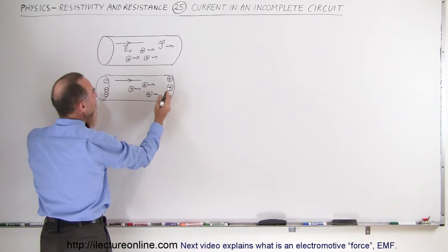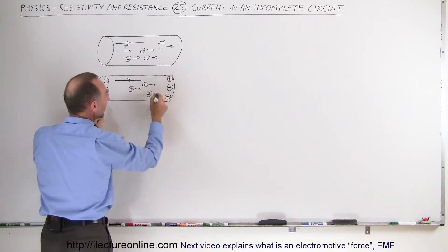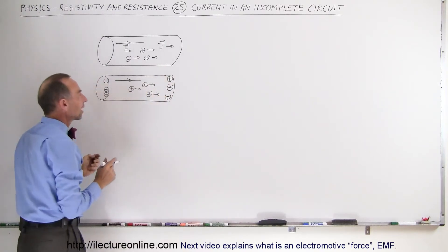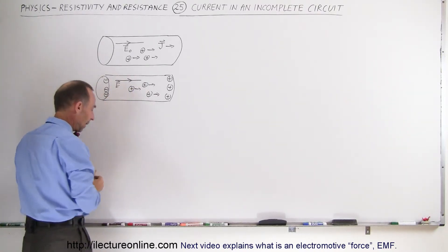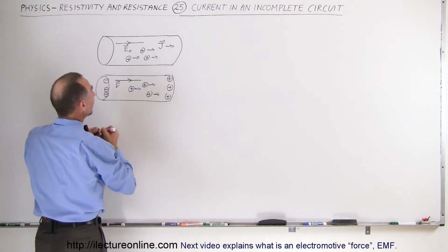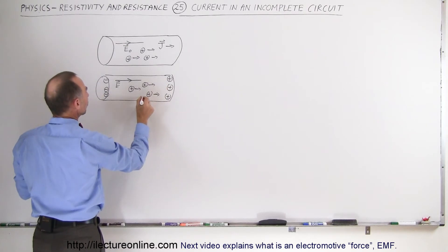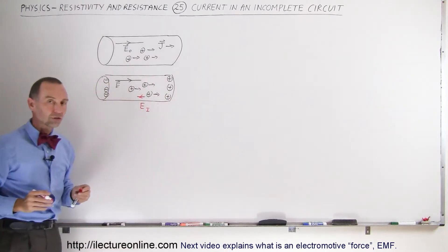what happens is that these charges accumulating on this side and evacuating from the left side will begin to set up its own electric field in the opposite direction. So what happens now, let me get a red pen, is that because of the separation of charges here, you begin to create an induced electric field because of the charges.